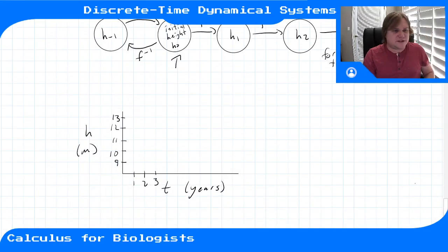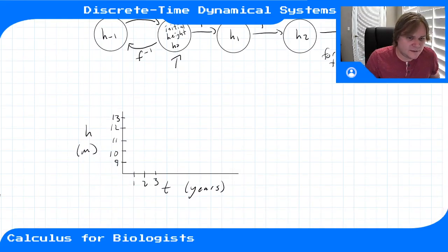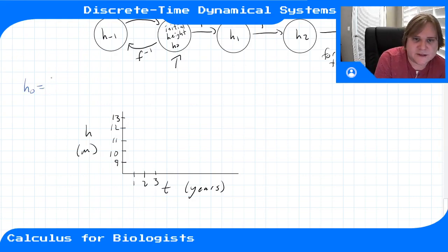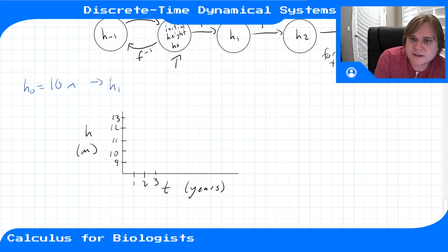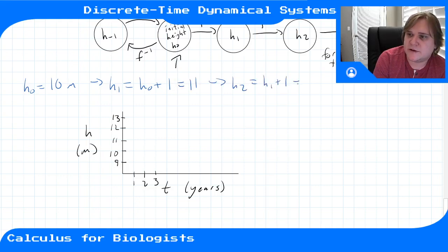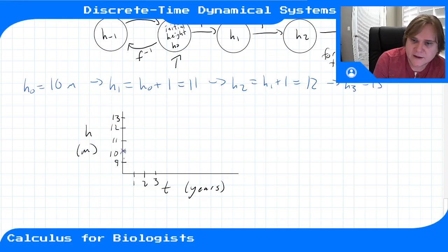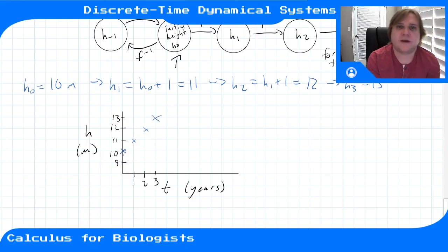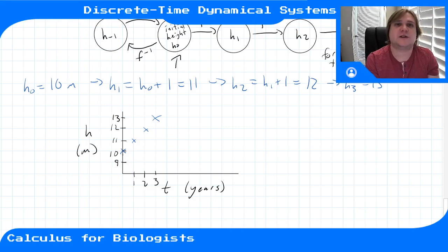Let's step through the tree height function. Starting with h0 = 10 meters, our update function gives h1 = h0 + 1 = 11, h2 = 12, h3 = 13, and so on — stepping through time, adding one meter a year. This is one solution to our discrete time dynamical system starting with initial condition 10 meters.